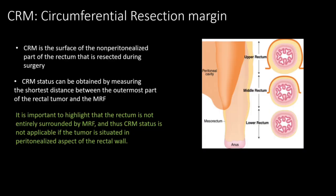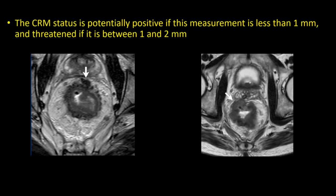The circumferential resection margin is the surface of the non-peritonealized part of the rectum that is resected during surgery. CRM status is obtained by measuring the shortest distance between the outermost part of the rectal tumor and the mesorectal fascia. Importantly, the rectum is not entirely surrounded by the mesorectal fascia, so CRM status is not applicable if the tumor is in the peritonealized aspect of the rectal wall. The lower rectum is entirely surrounded by mesorectal fascia, but in mid and upper rectum, it is surrounded only posteriorly. CRM is potentially positive if less than 1 mm, threatened if 1 to 2 mm, and negative if more than 2 mm.